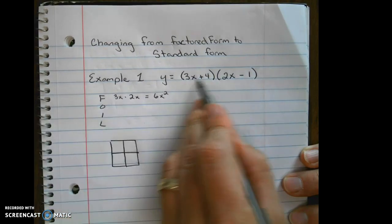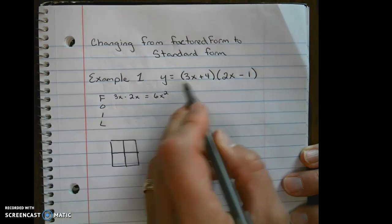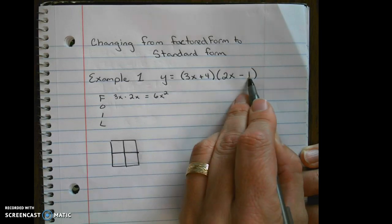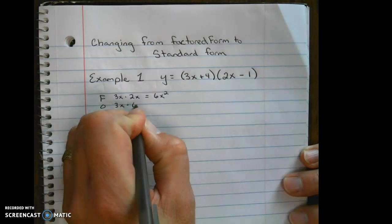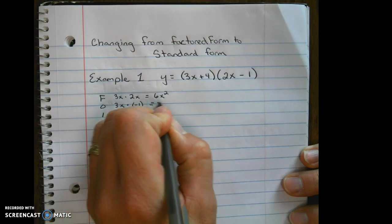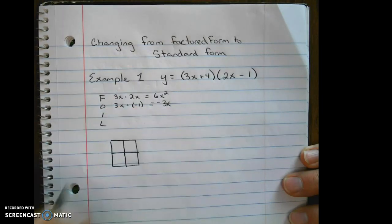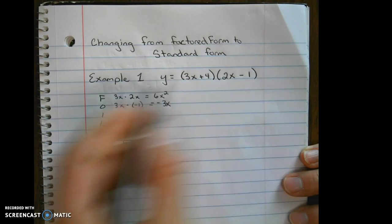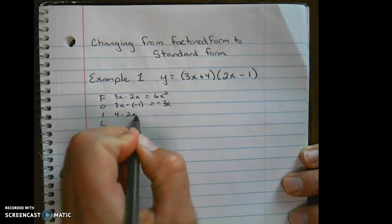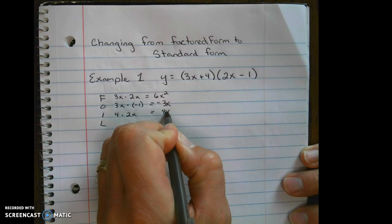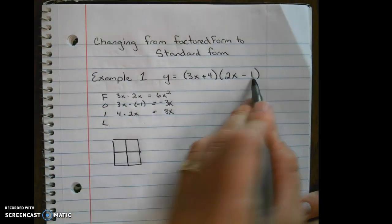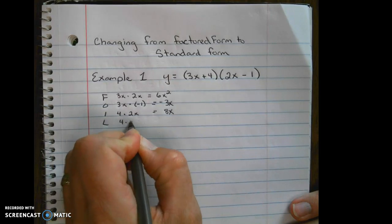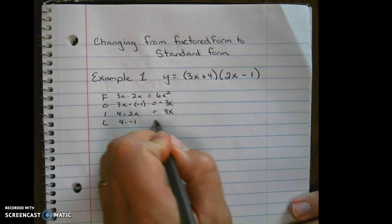Okay, those are the first two terms. O is for outer, so 3x times negative 1, which is negative 3x. I for inner, we have 4 times 2x, which gives us 8x. And then the last terms, we have 4 times negative 1, which gives us negative 4.